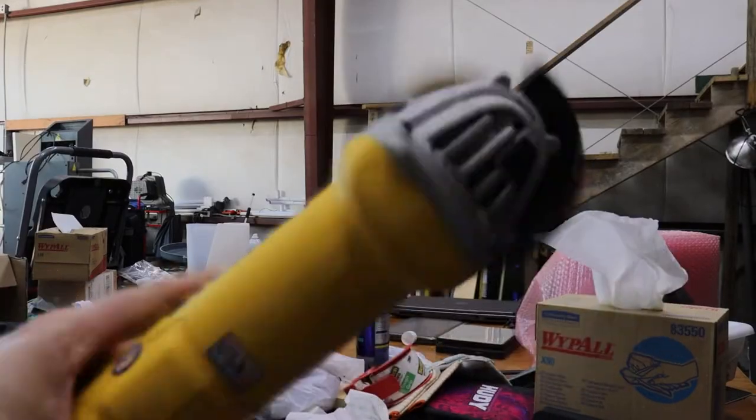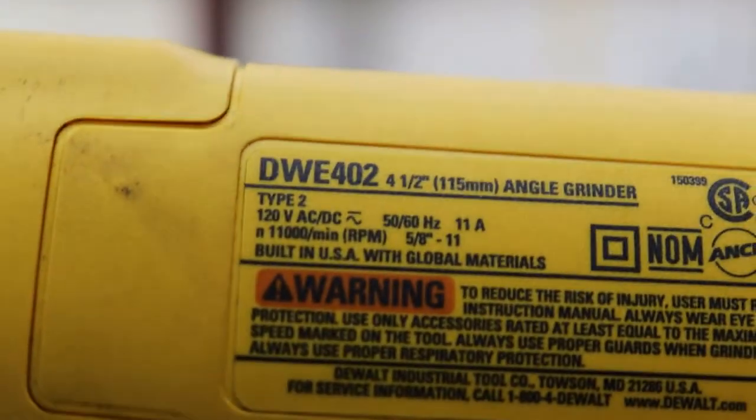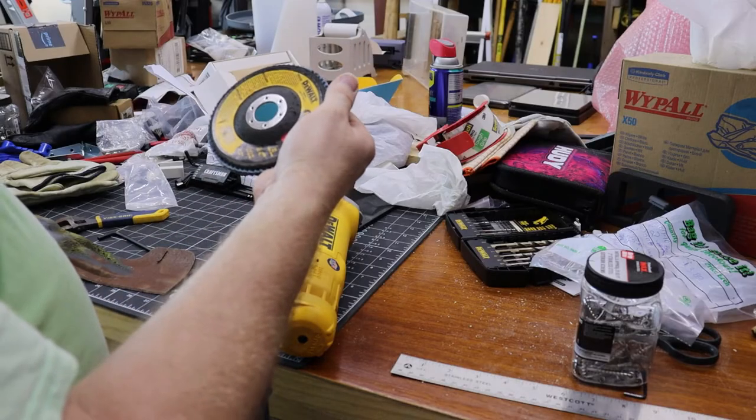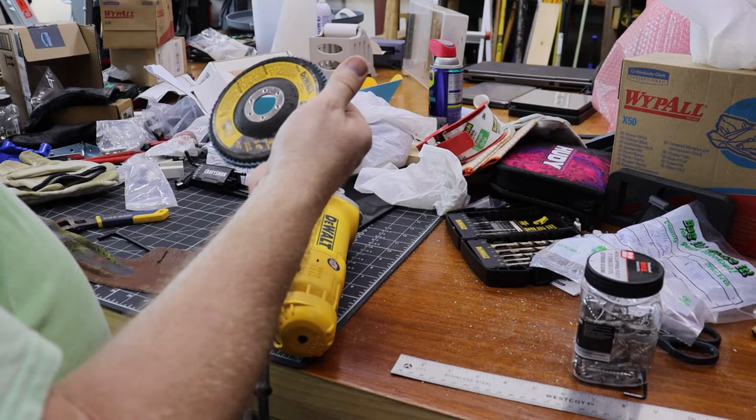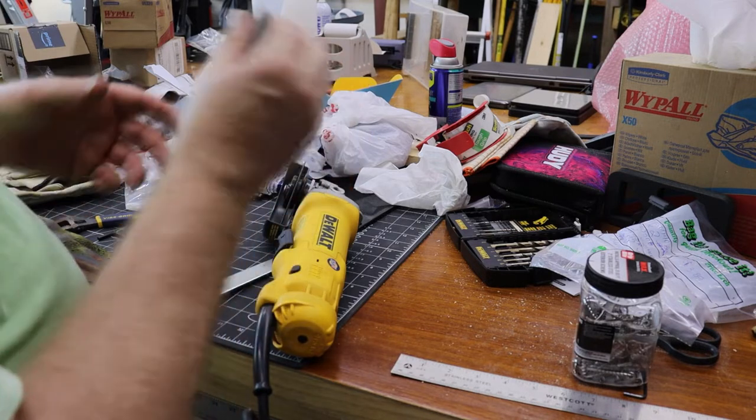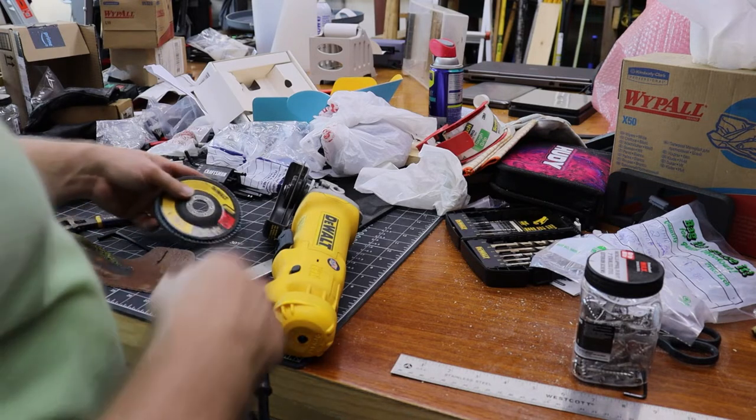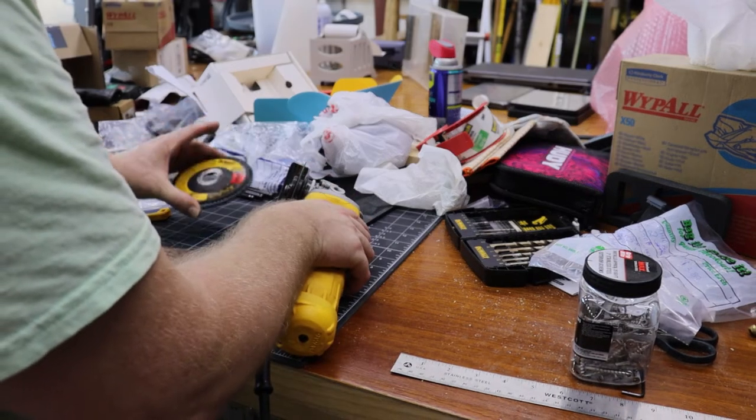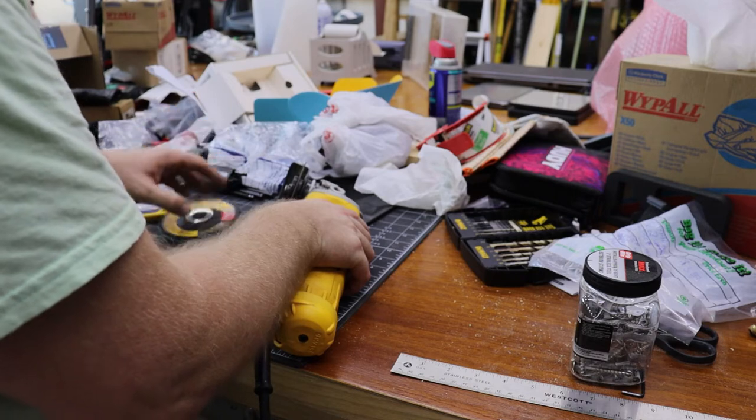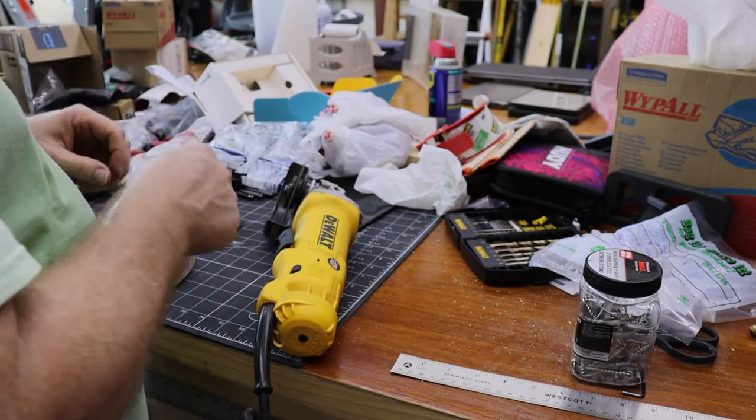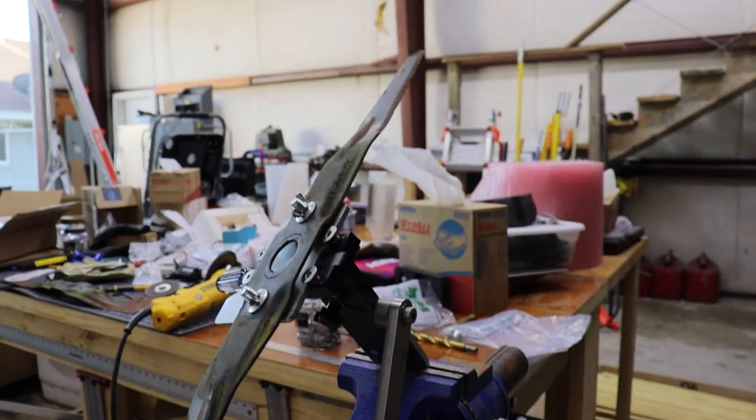The grinder I'm using is the DeWalt DWE402. I'm gonna go with a 4.5-inch flap wheel, Z36 grit. That's all I have for a flap wheel. I guess it's 36 grit, but I don't know what the Z is. I'll show you the blade before and after.